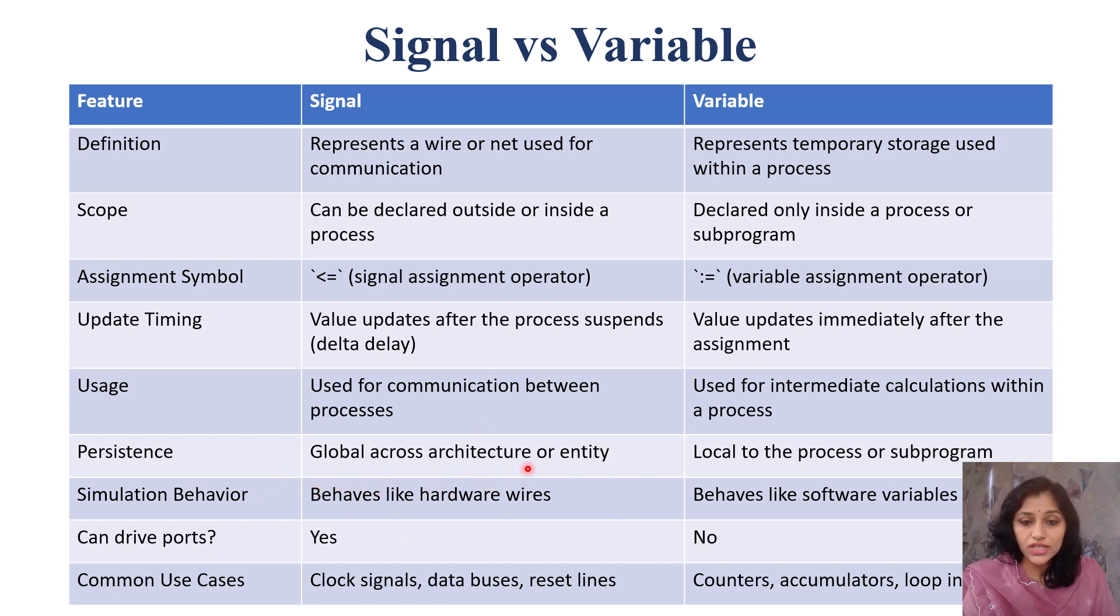Persistence: signals are global across architecture or entity. They are local to the process or sub-program. Simulation behavior behaves like hardware wires. Here it behaves like software variables. Can drive ports: of course, signals can drive ports. We can declare our signals in entity. Variables can't drive ports. They are temporary.